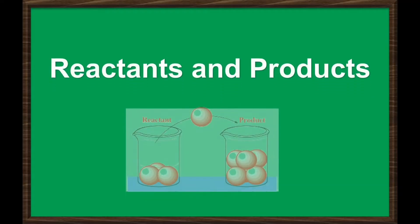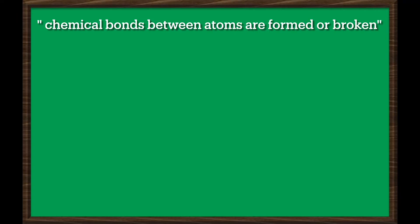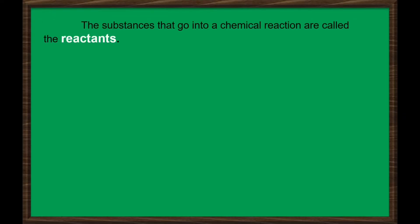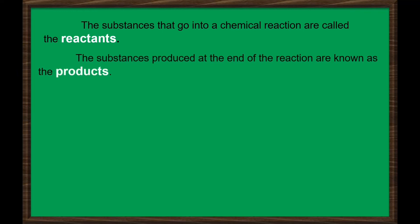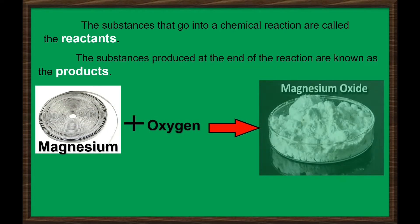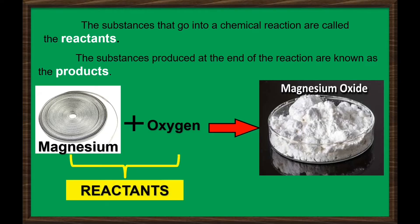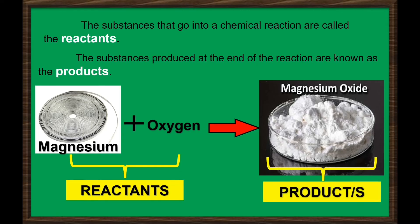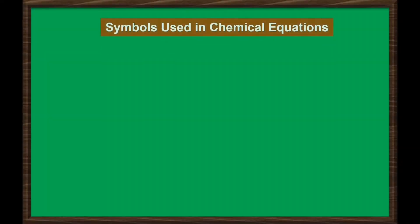What are reactants and products? Chemical reactions occur when chemical bonds between atoms are formed or broken. The substances that go into a chemical reaction are called the reactants, and the substances produced at the end of the reaction are known as the products. For example, when magnesium reacts with oxygen, it forms magnesium oxide. The magnesium and oxygen gas are the reactants, while the magnesium oxide is the product.